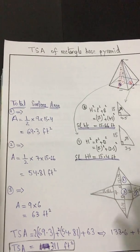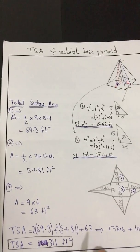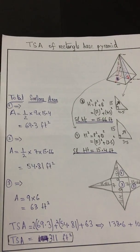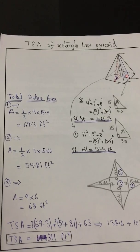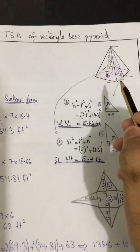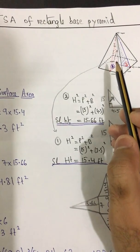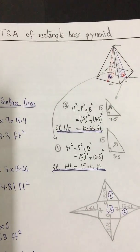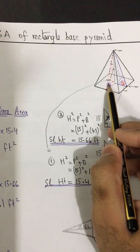Since it is a rectangle-based pyramid, there will be two slant heights, so we have to find two slant heights. To find two slant heights, we have to make two right-angle triangles inside the pyramid.